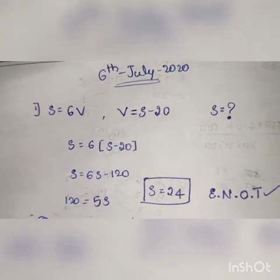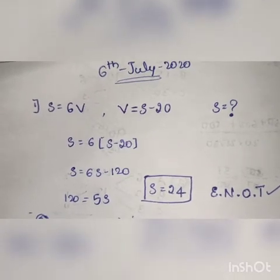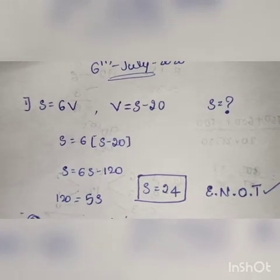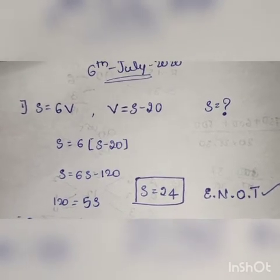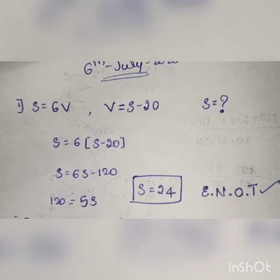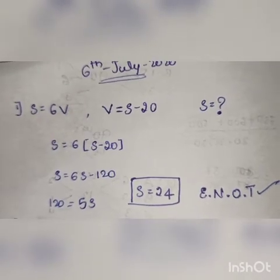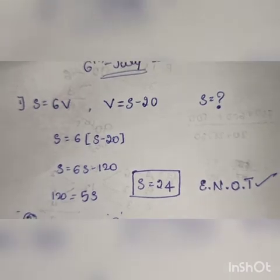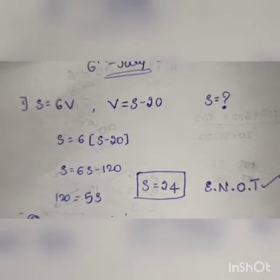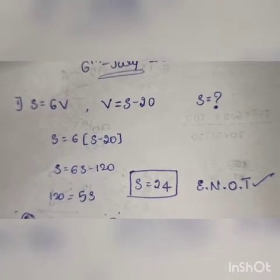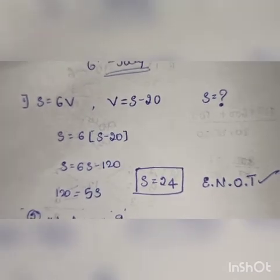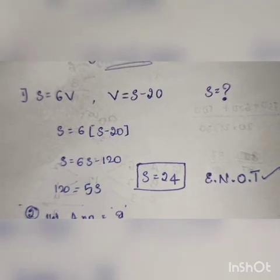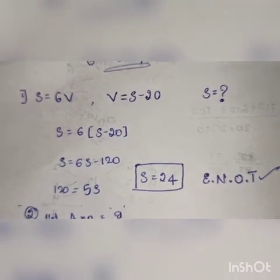Suraj's present age is six times Vijay's age. Vijay is 20 less than Suraj's age. So S equals 6V, V equals S minus 20. Substituting, S equals 6 times (S minus 20). S equals 6S minus 120.